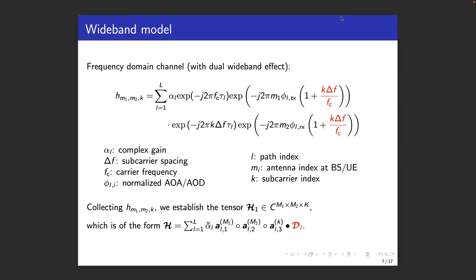We can now collect the channel entries into a tensor, and we see that we can no longer write this tensor as the outer product of steering vectors. But there is now a new matrix, or a new tensor DL, which creates a coupling between the dimensions. We can ignore this coupling, but we will see that this may lead to channel parameter estimation errors.